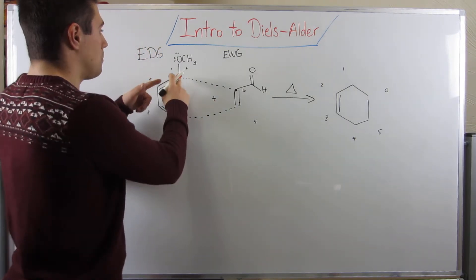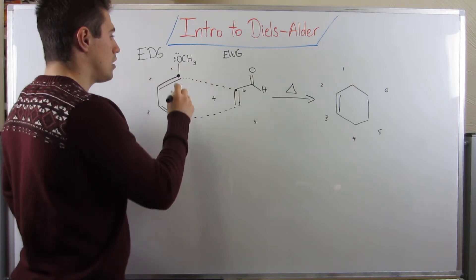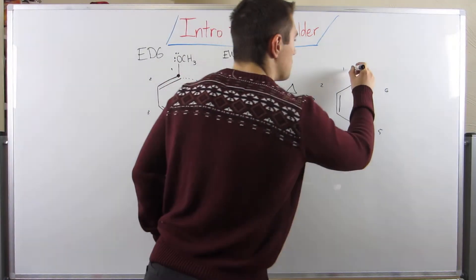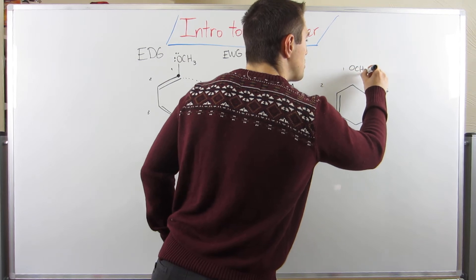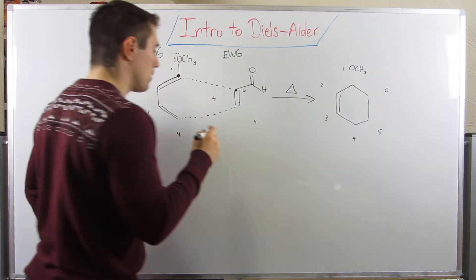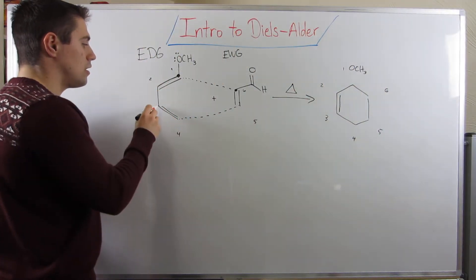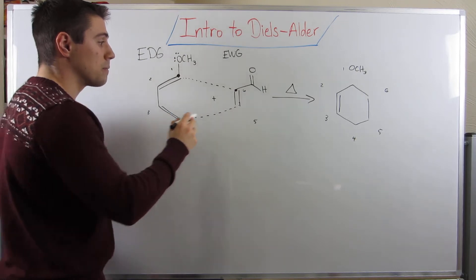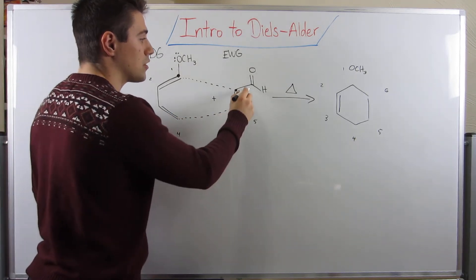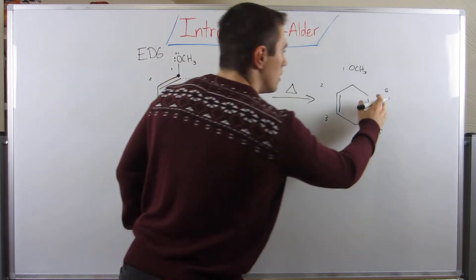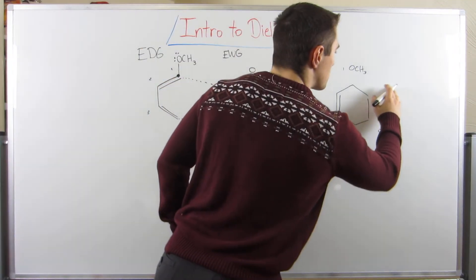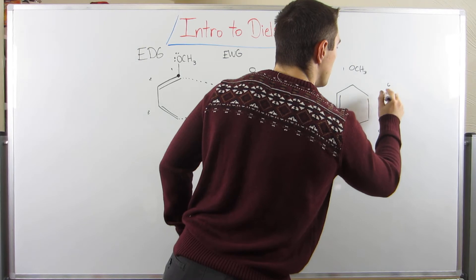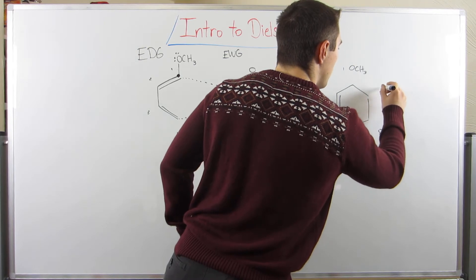On position number one, we're going to have this OCH3 - I'll just float him up over here. Nothing on position two, nothing on position three, nothing on position four, nothing on position five. And on six, we have this aldehyde, so I'm going to move six over here and float him out there.